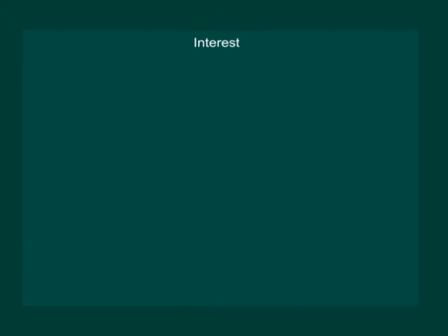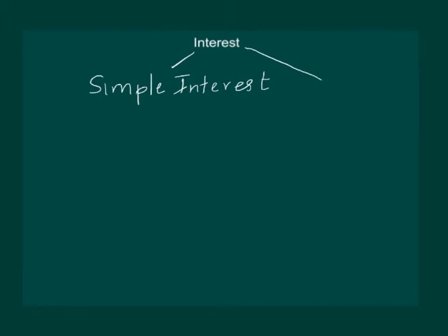There are two types of interest: one is simple interest, which we have studied in the previous class, and the other is compound interest, which we will study in detail in this class.